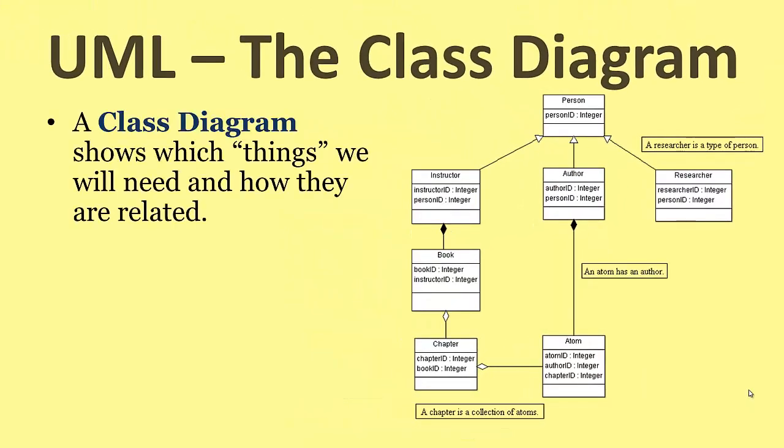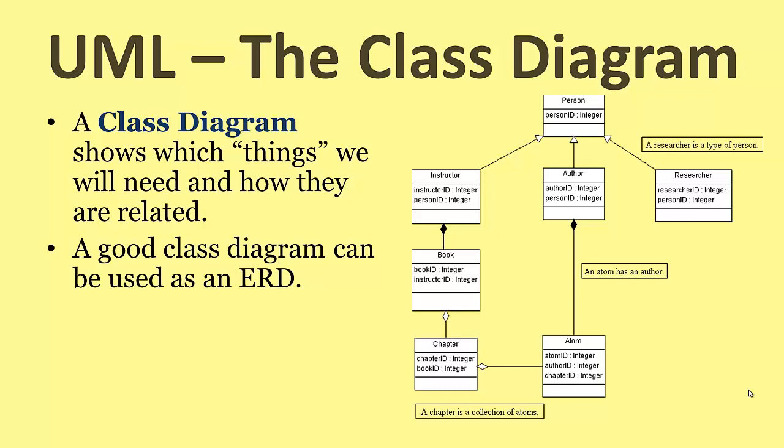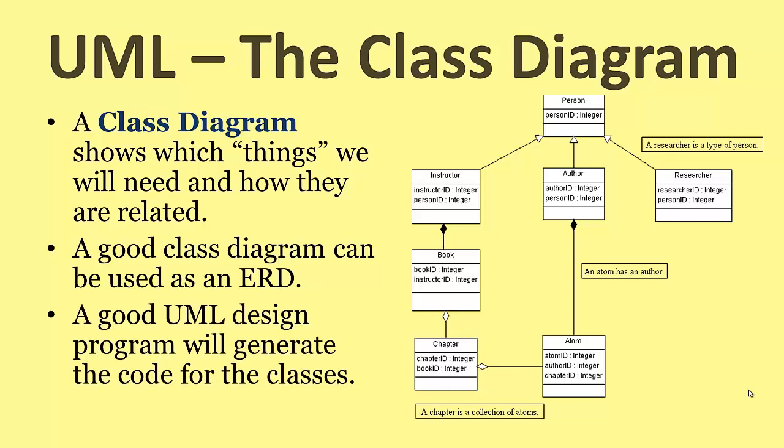So let's go over that again. A class diagram shows which things we will need and how they're related. A good class diagram, by the way, can be used as an entity relationship diagram. If you imagine that you've got your class diagram set up with all the data fields and the methods. Well, we can disregard the methods and call it an entity relationship diagram. We have a table list and a list of all the fields and their types that need to go into the database. So being clever and thinking through your class diagram can help you complete two major jobs. A good UML design program will generate the code for the classes for you. So the more effort you spend on getting this class diagram correct, the more programming you will have done straight away. I'm using ArgoUML for this and that does an awful lot of the work for me. You may want to download it since I'm going to be showing you the project files later on.